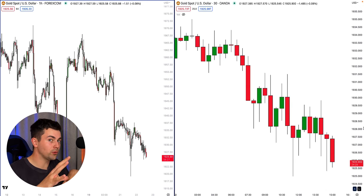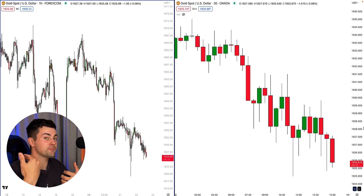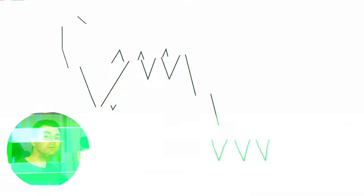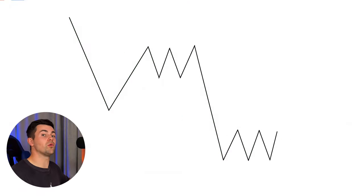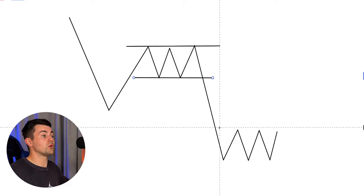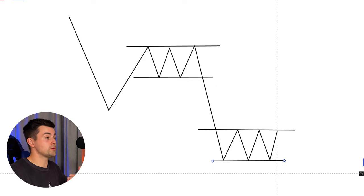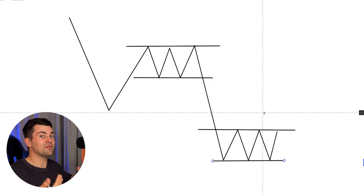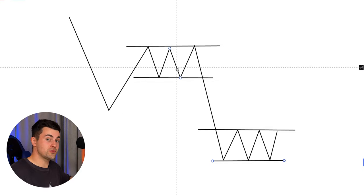The timeframes we will apply for multiple timeframe analysis are the hourly and 30-minute timeframes. Our task will be to analyze the price action and monitor the intraday reaction of the price to the key level. On these timeframes, we should look for signs of consolidation, weakness, and indecision. The best sign of indecision and consolidation is the formation of a range. We will look for horizontal ranges, because within them trading orders and volumes are accumulating.